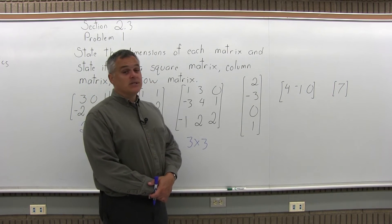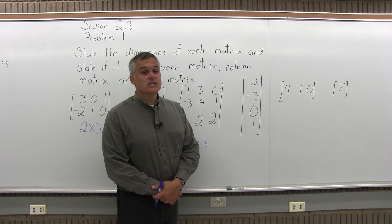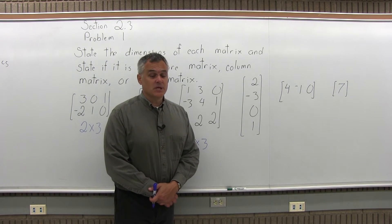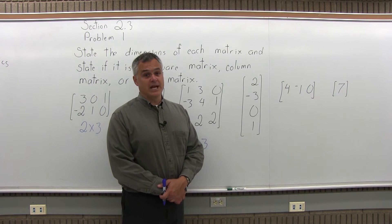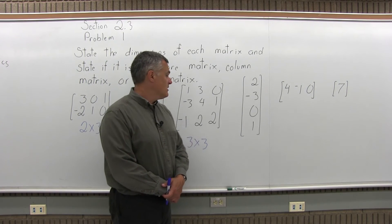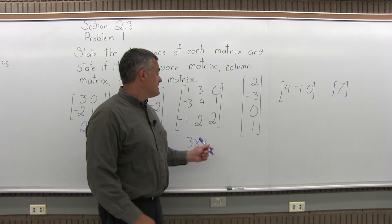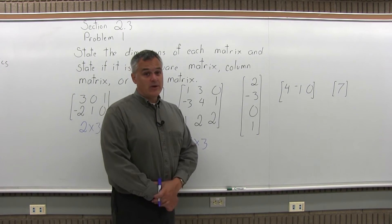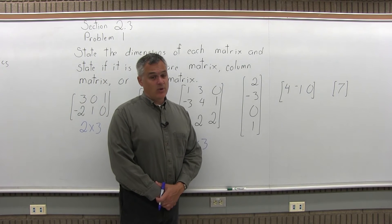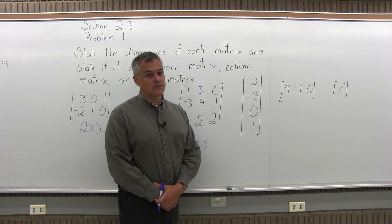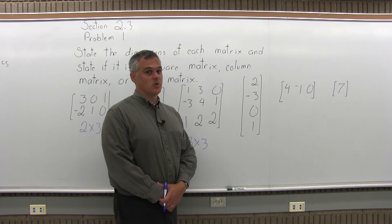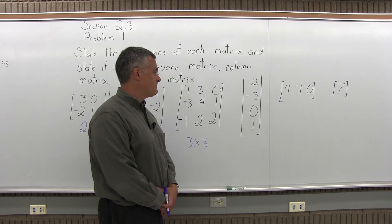Is it a square matrix? Yes, it is, because it has the same number of rows as columns, which makes it look square. Is it a row matrix? No — it does not have only 1 row. Is it a column matrix? No, it is not, because it has more than 1 column.